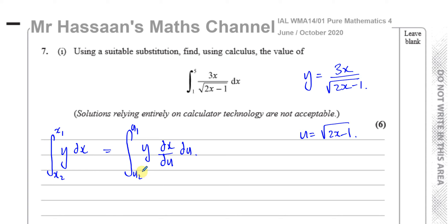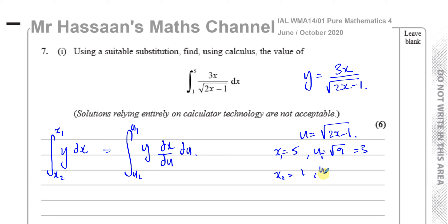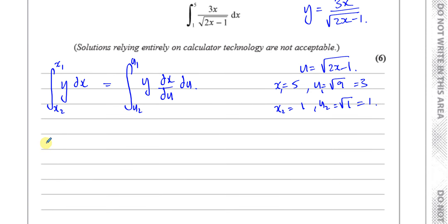I need to find what u1 and u2 are. Since u equals the square root of 2x minus 1: when x equals 5, u equals the square root of 2 times 5 minus 1 equals the square root of 9, which is 3. And when x equals 1, u equals the square root of 1, which is 1. So the new limits are 3 and 1.